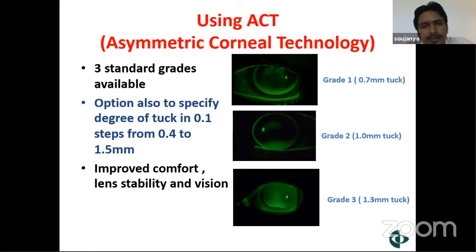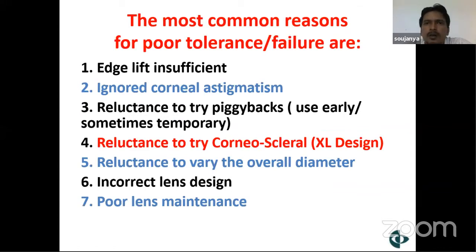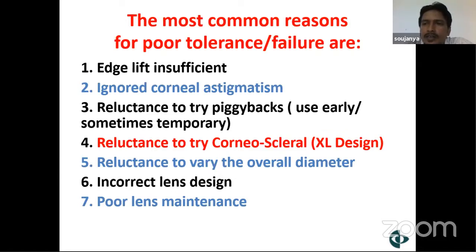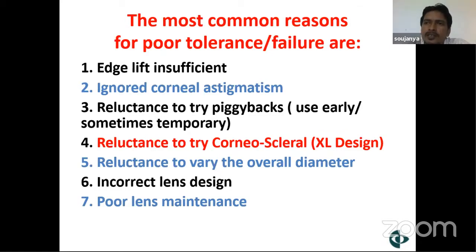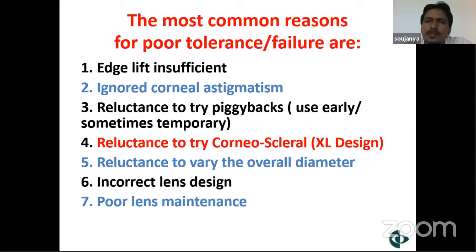The most common reasons for poor tolerance or fitting failure include: insufficient edge lift, ignoring corneal astigmatism, reluctance to try piggyback fitting — where a daily disposable soft lens is placed first with the Rose K lens on top — reluctance to try corneal clearance or XL designs, reluctance to vary overall diameter, using an incorrect design, and poor lens maintenance.